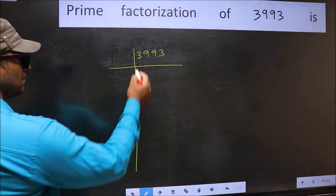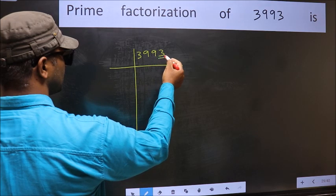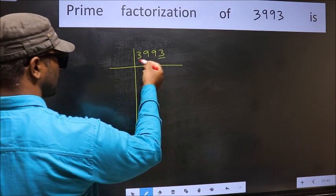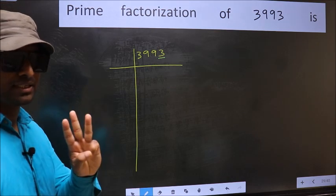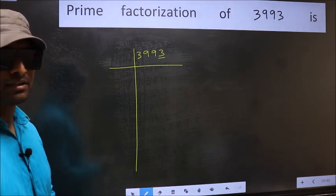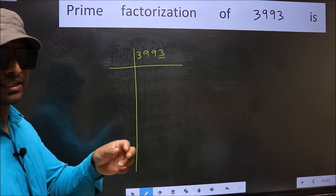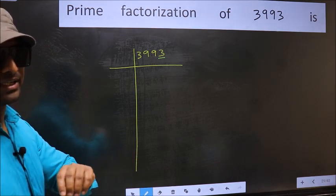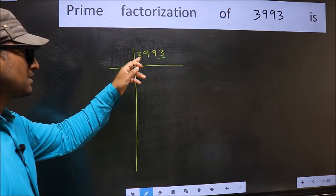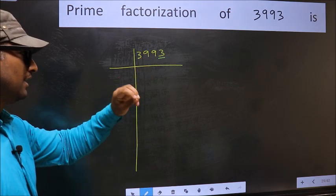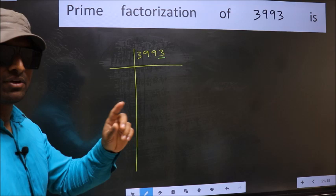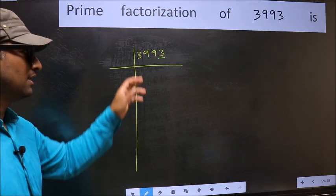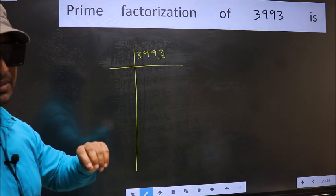In this number, the last digit is 3, not 0. So this is not divisible by 2. Next prime number 3. To check divisibility by 3, we should add the digits. 3 plus 9 plus 9 plus 3 gives 24. And 24 is divisible by 3, so this number is also divisible by 3.